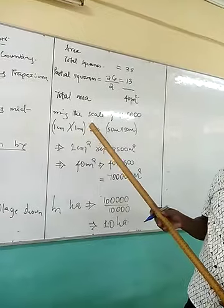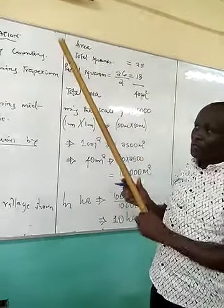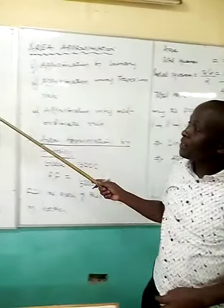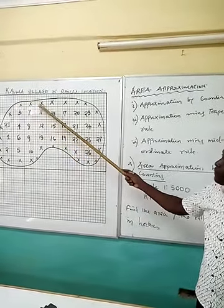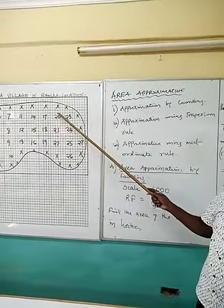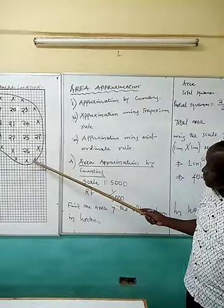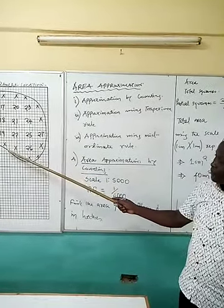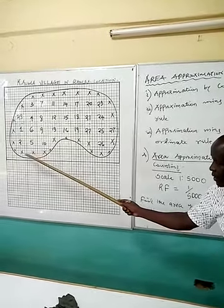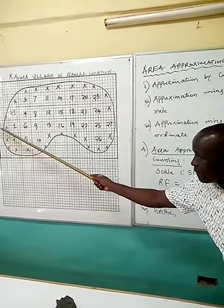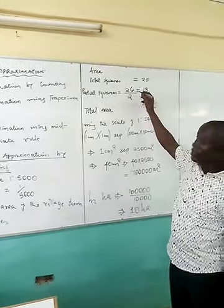Then the other squares I call them the partial squares and if I count the partial squares from the same Kauma village I'll have 1, 2, 3, 4, 5, 6, 7, 8, 9, 10, 11, 12, 13, 14, 15, 16, 17, 18, 19, 20, 21, 22, 23, 24, 25, 26. So 26 partial squares.